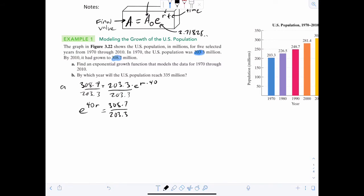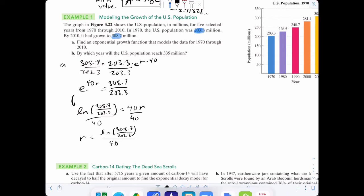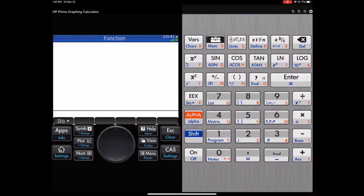And now we're going to convert that to a natural log. That would be natural log 308.7 over 203.3 is equal to 40r. We divide by 40. So there we have it. r is natural log 308.7 over 203.3, all divided by 40. Now that looks pretty weird, so what we're going to do is use a calculator. So open up your calculator like that.